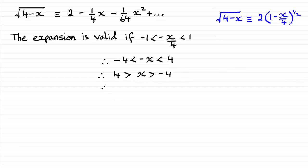And this doesn't look very good written that way round. It's best to completely reverse this round and you'll end up with minus 4 is less than x which is less than 4. And another way of writing this is to say the modulus of x is less than 4.